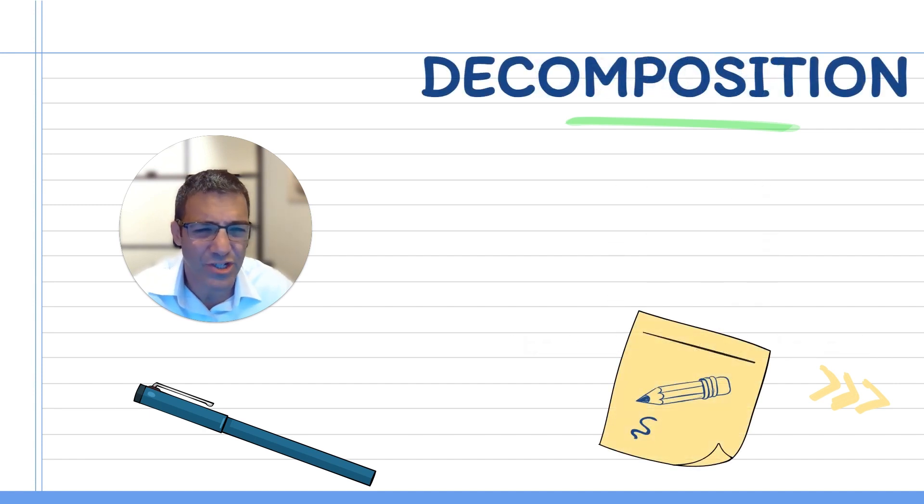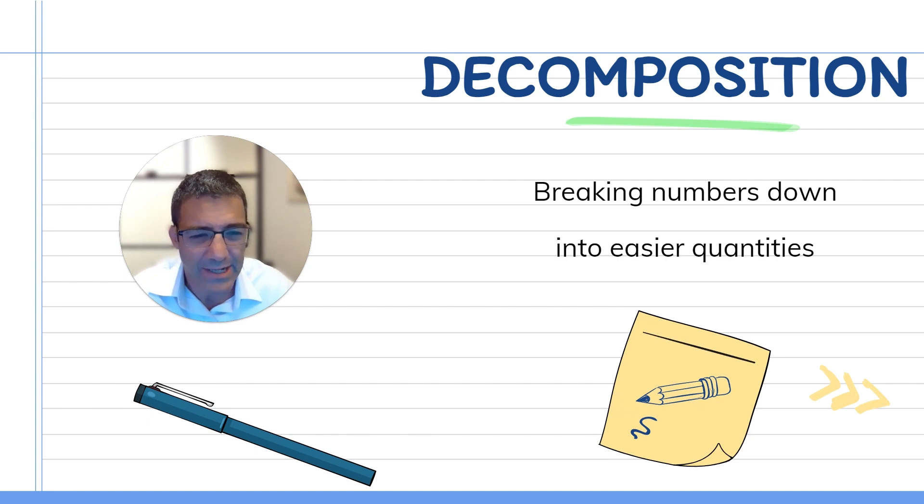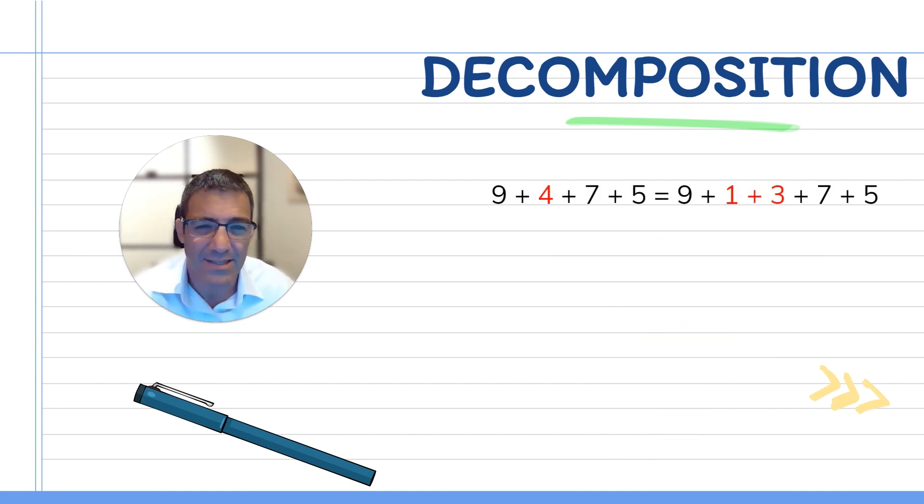Now decomposition is our next skill here. For this strategy, we're going to break numbers down into easier quantities. What this looks like is if you have an operation like 9 plus 4 plus 7 plus 5, you can break the four down into a one and a three. The one can be given to the nine, and the three can be given to the seven, which gives you nice blocks of 10. Then you have a five that's sort of hanging out there. So this will be 10 plus 10 plus five, which is 25.